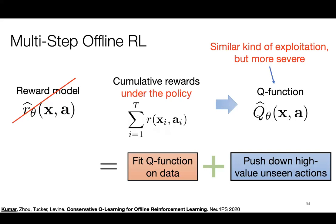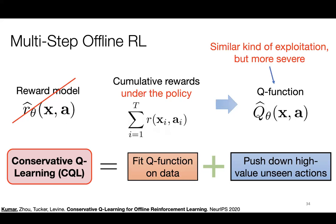This was all with reward models in the one-step setting. But if you care about cumulative rewards, you can apply the same procedure with the Q function. The same exploitation issues arise, and they're even more severe because you rely on future states affected by current actions. You use the same approach: fit the Q function on data using Q-learning or model-based methods, then push down high-value unseen actions in the Q function — and with model-based methods, also push down high-value unseen states. We call this Conservative Q-Learning, CQL, because we train a Q function that is conservative or pessimistic in this manner.